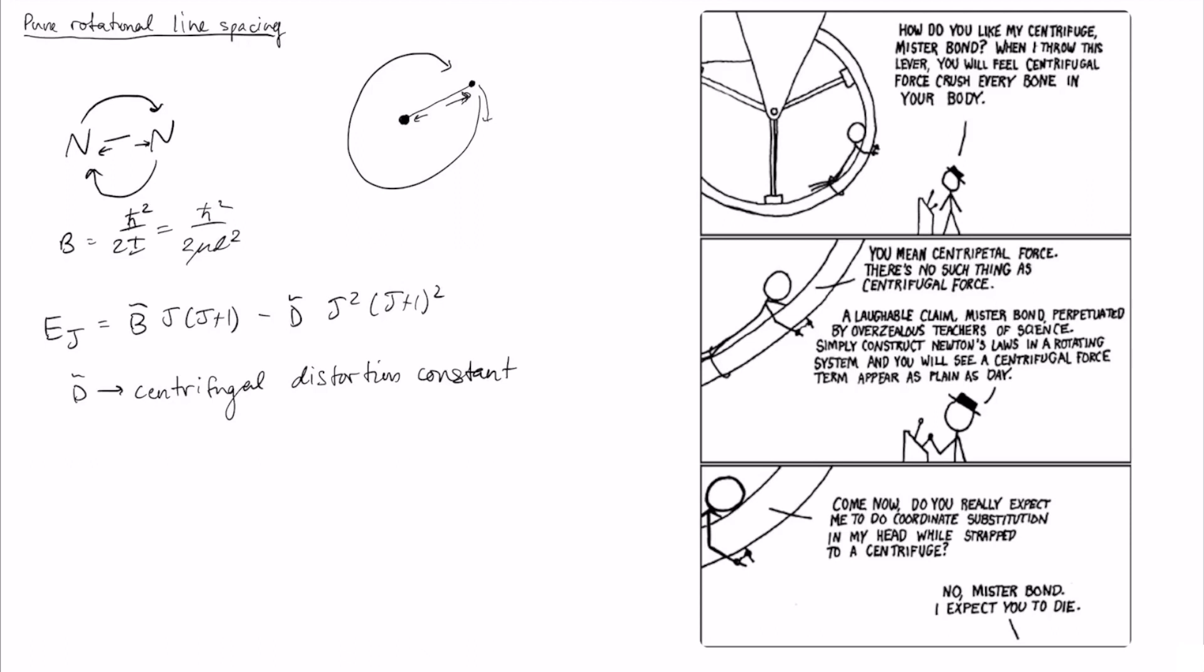And it tends to be quite small because the centrifugal distortion term actually tends to have a pretty minor effect on the pure rotational line spacing. As an example for HCl, which we'll take a look at the data in a second, the ratio of D to B - remember, if you look at this equation, they're both multiplied by integers and the whole thing ends up being an energy, which means they both have the same units and so you can directly compare them - so this D divided by B-tilde ends up being approximately 10 to the minus 5.